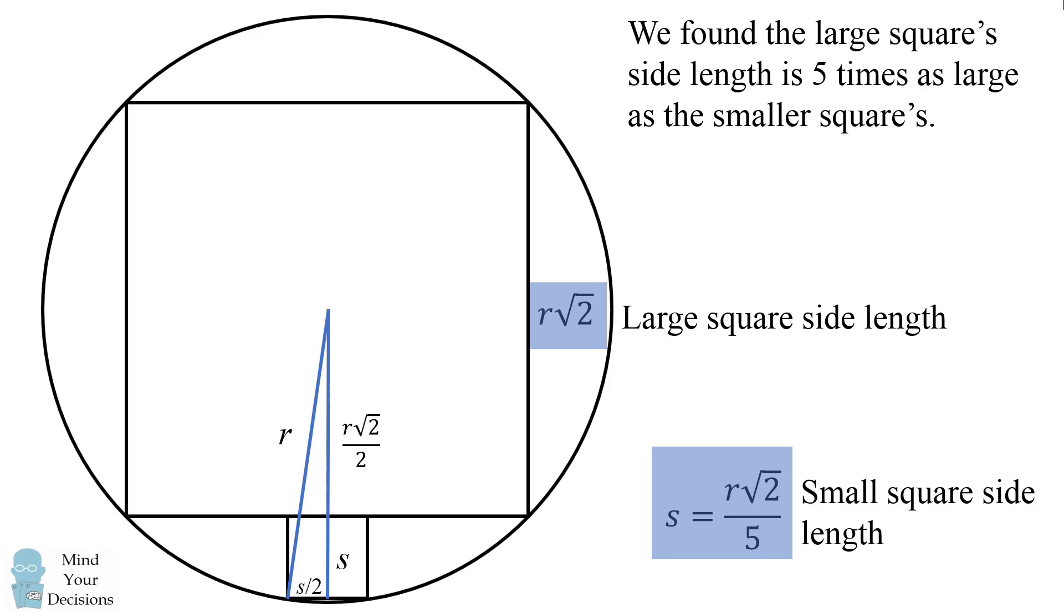Since area is proportional to side length squared, we can then conclude the large square's area is equal to 5 squared, which equals 25 times as large as the small square. And that's our answer. The large square is 25 times larger than the small square.